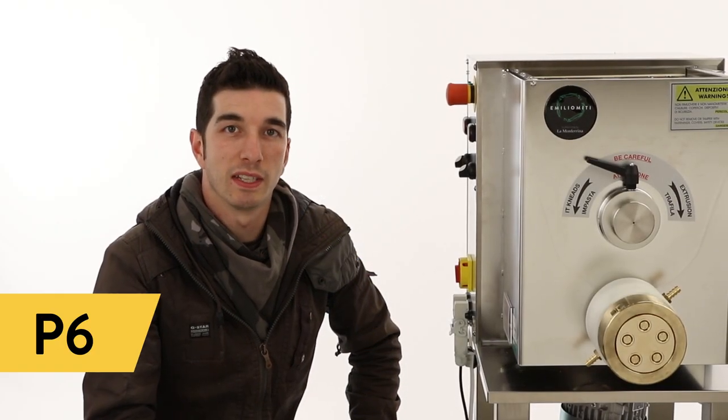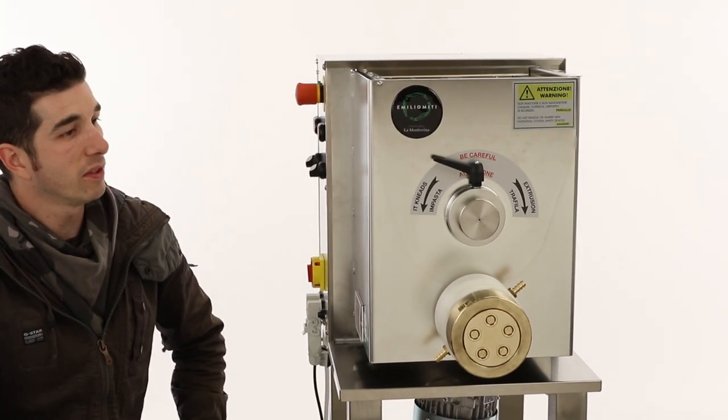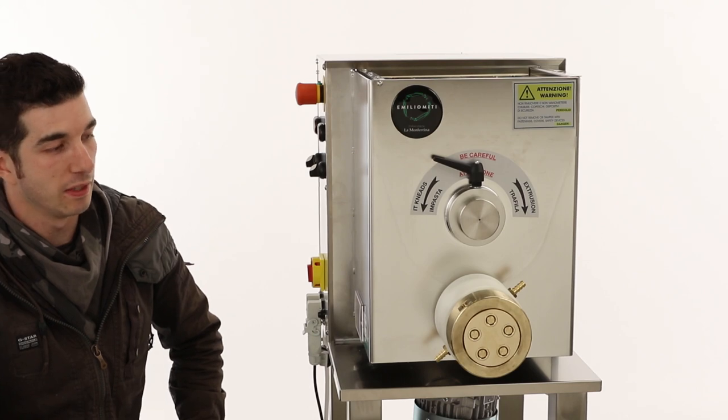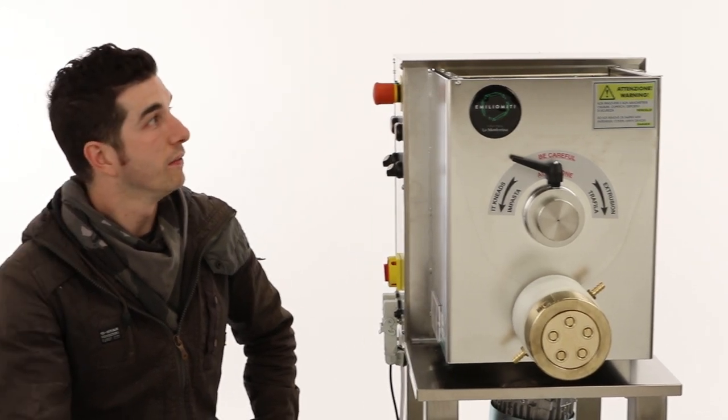Hi, today we're going to talk about the P6. The P6 is a standalone mixer and pasta extruder with automatic cutter, cooling fan, and cooling sleeve. It's very versatile, very fast, and very efficient.